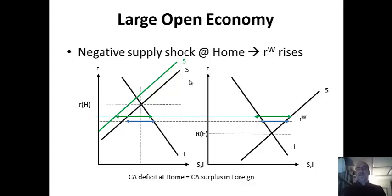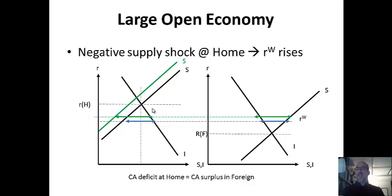In the real world, large countries include the U.S. and China. Britain might also be large economically. A negative shock to a large country affects its partners too. The negative shock increases the current account deficit somewhat, but it also raises the world interest rate as well.